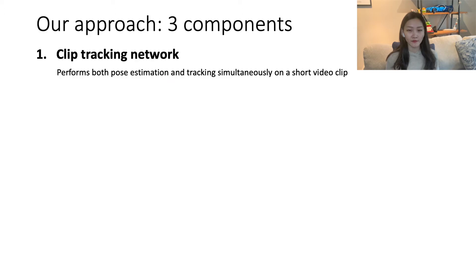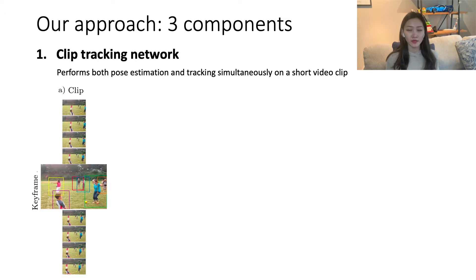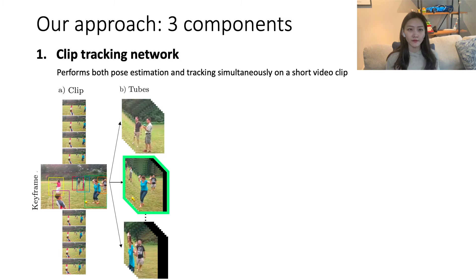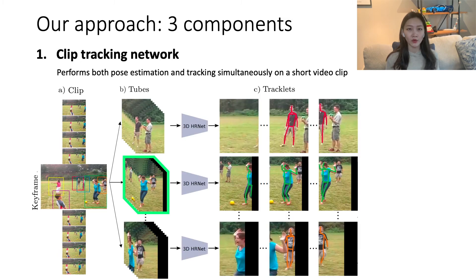Our approach consists of three components. The first component is called Clip Tracking Network and it performs pulse estimation and tracking simultaneously on a short video clip. Given an input video clip, Clip Tracking Network first localizes each person in the middle frame of the clip, which we refer to as the keyframe. Then, for each person bounding box detected in this keyframe, a spatial-temporal tube is cut out at the bounding box location over the corresponding clip. We input each of these tubes into a 3D network that both estimates the pulse of the central person in the keyframe and tracks their pulse across the whole video clip.